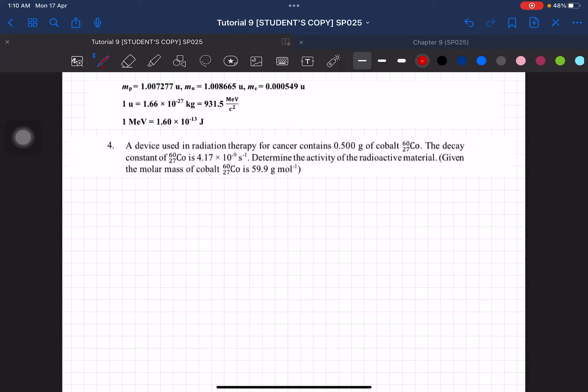Question 4. A device used in radiation therapy for cancer contains 0.5 gram of cobalt. The decay constant is given as this. Determine the activity of the radioactive material.